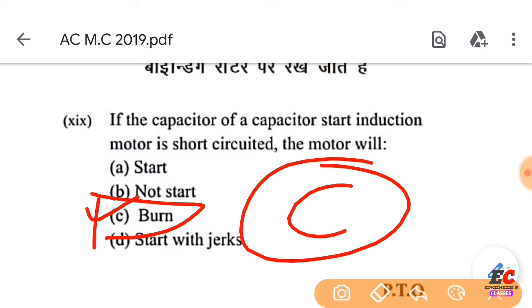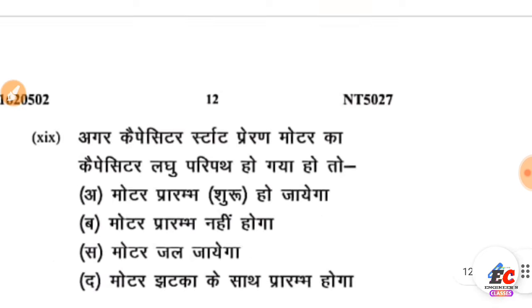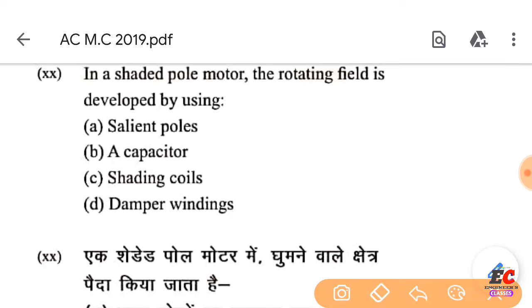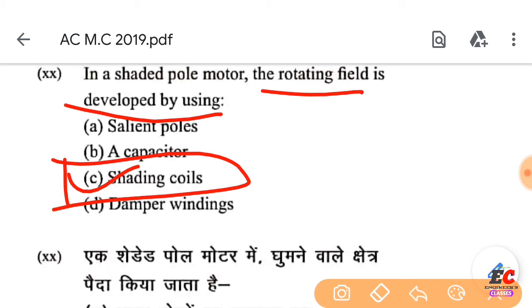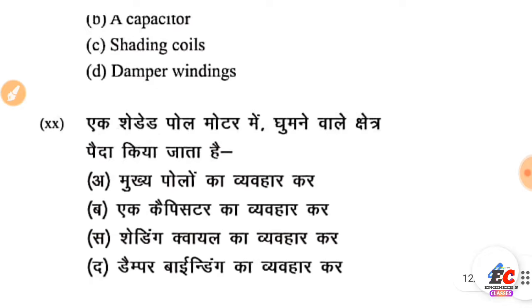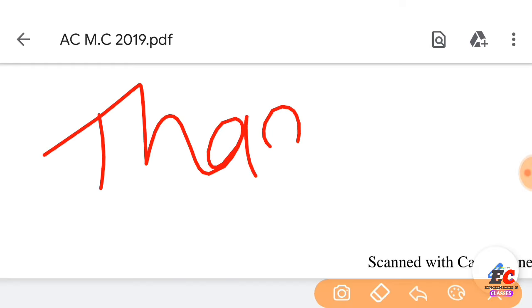Question number 20: In the shaded pole motor, the rotating field is produced by using a shading coil. Some turns in the shading coil create the rotating field.